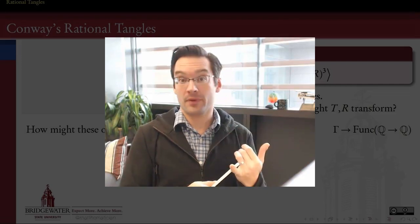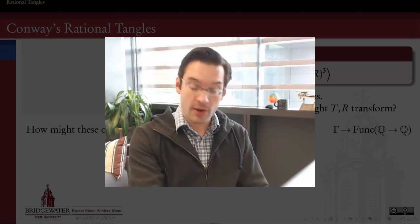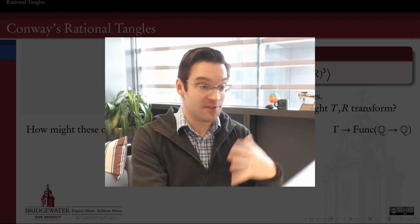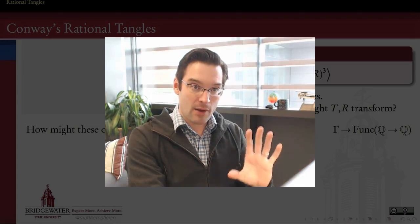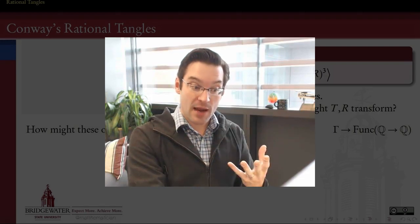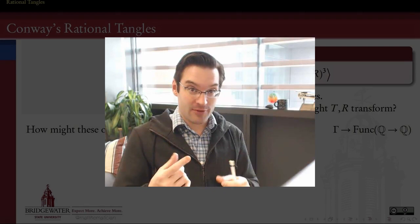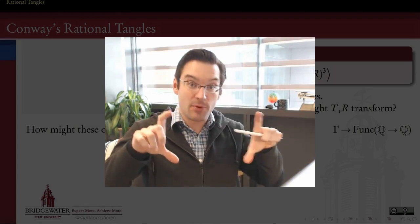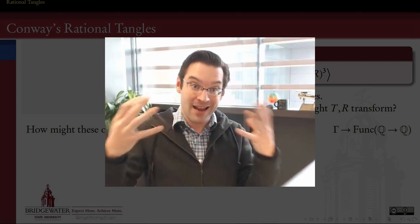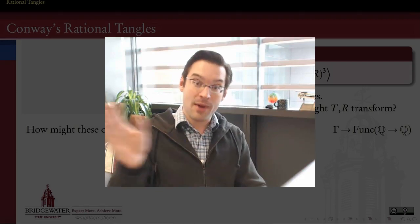We know what rational tangles are. They're made up of twists and rotations, and we understand the tangle group well enough to know how twists and rotations interact, how we can invert twists and rotations using more twists and rotations. But that doesn't yet get us to where we really want to go, which is to figure out how to represent a rational tangle with a rational number.